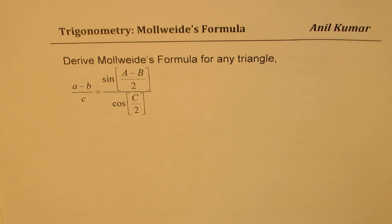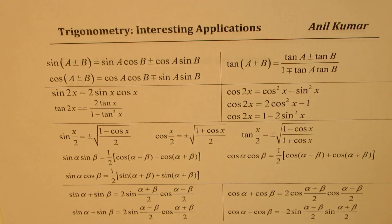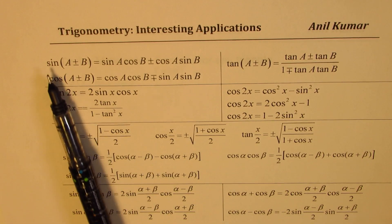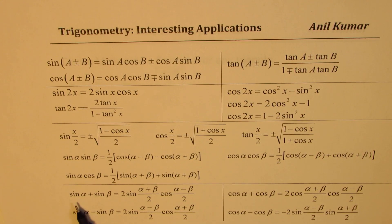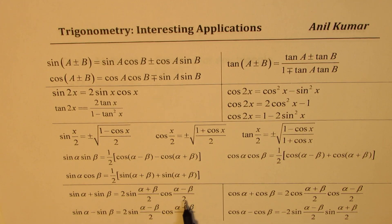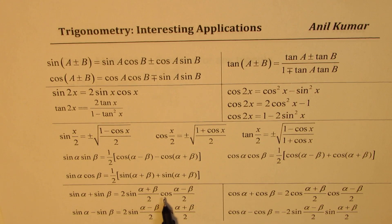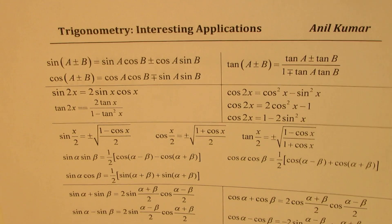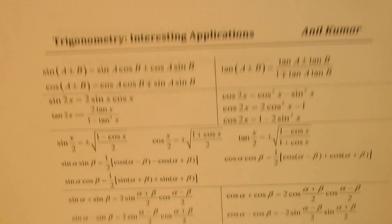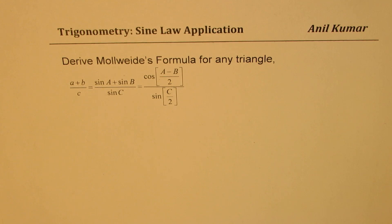Now to derive this formula, we are going to take help of some trigonometric formulas — basically the compound angle formulas. We have the sum-of-sines identity: sin α + sin β = 2 sin((α + β)/2) · cos((α − β)/2). This formula converts sum of sines to products using half angles, and it will be used along with the sine law to prove the result. So let's begin our derivation.